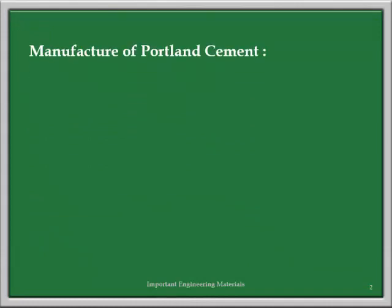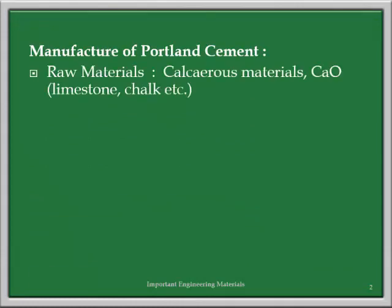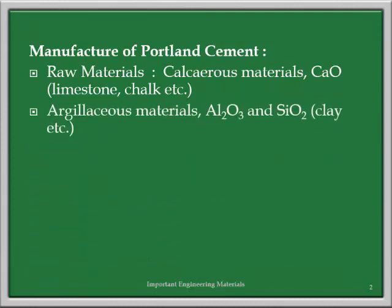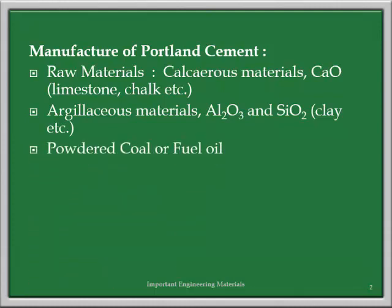The raw materials required for the manufacture of Portland cement include: first, calcareous materials that is calcium oxide or compounds of calcium; second, argillaceous materials that is compounds of aluminium and silica, also called clay material; third, powdered coal or fuel to burn the raw materials; and fourth, gypsum.